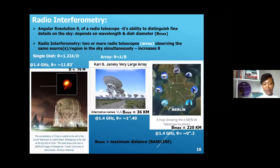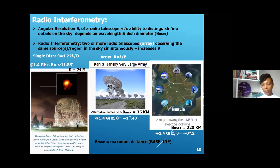In radio astronomy, you can carry out observations either using a single dish, or you can carry out observations using two or more telescopes simultaneously observing the same source in the sky at the same time. When you combine more than two telescopes, we form what we call a radio telescope array.